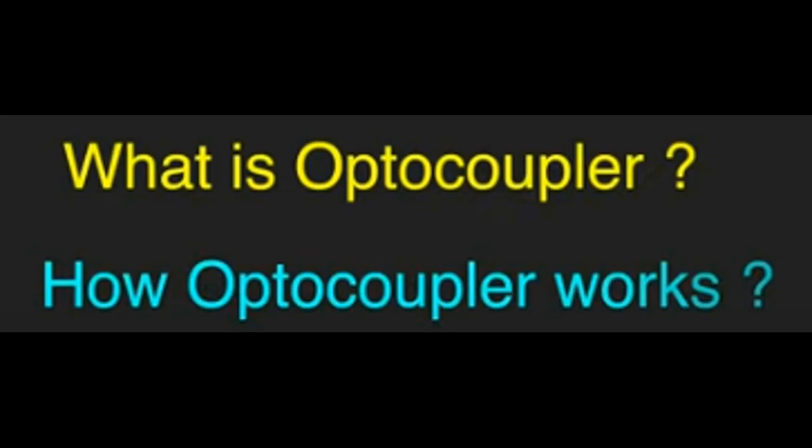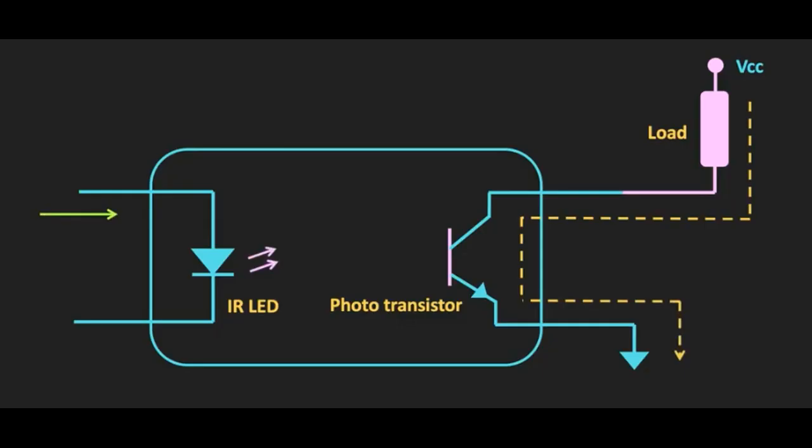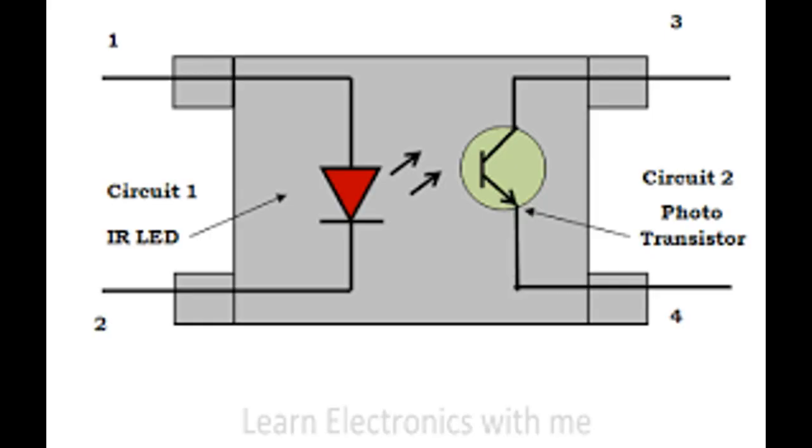An optocoupler is an electronic component that transfers electrical signals between two isolated circuits by using light. Optocoupler can either be used on their own as a switching device or used with other electronic devices to provide isolation between low and high voltage circuits.